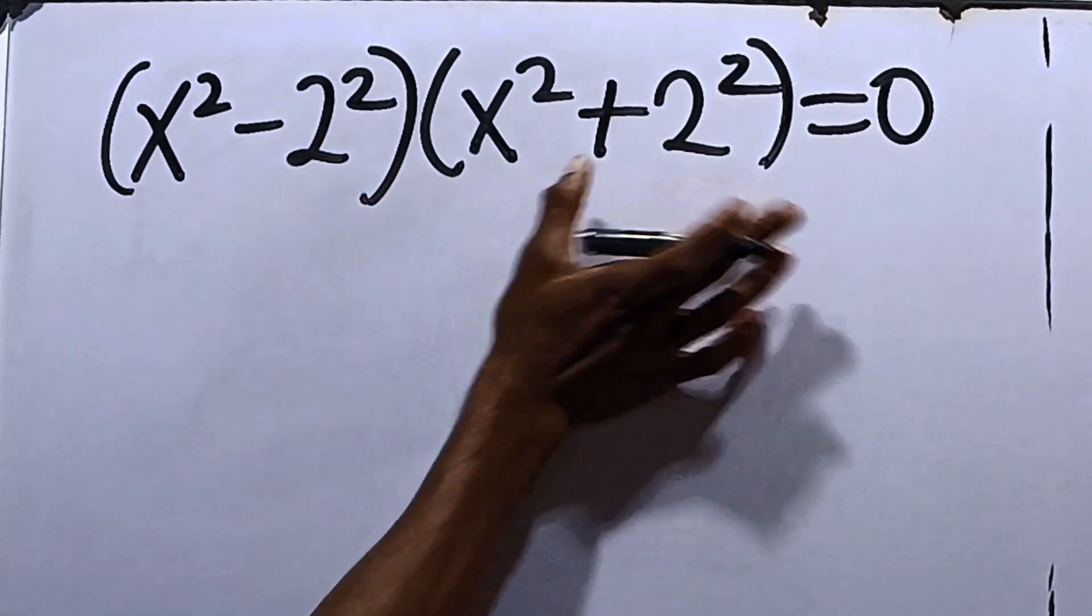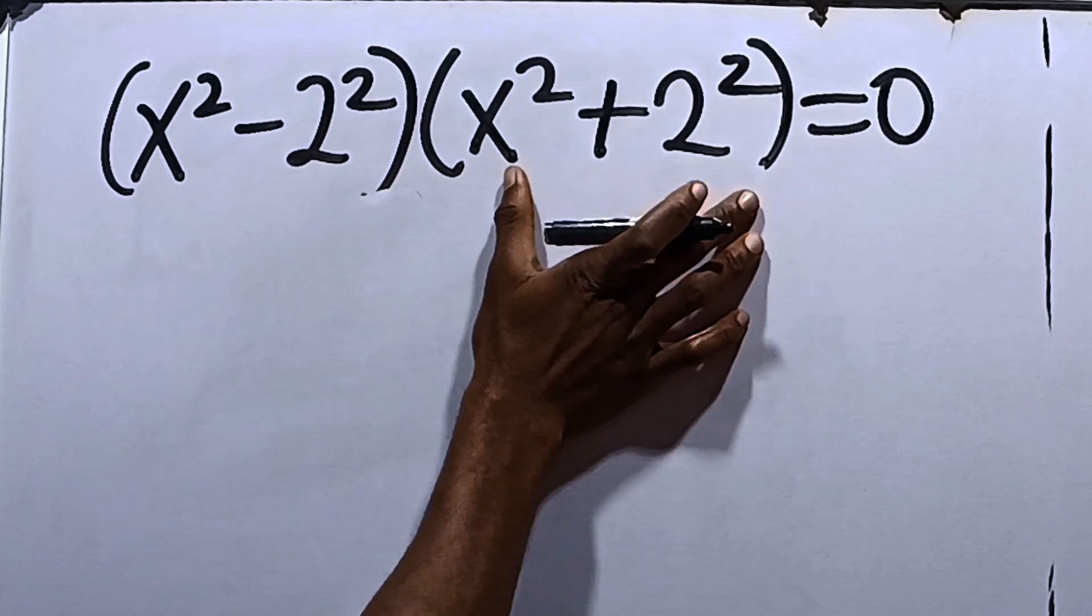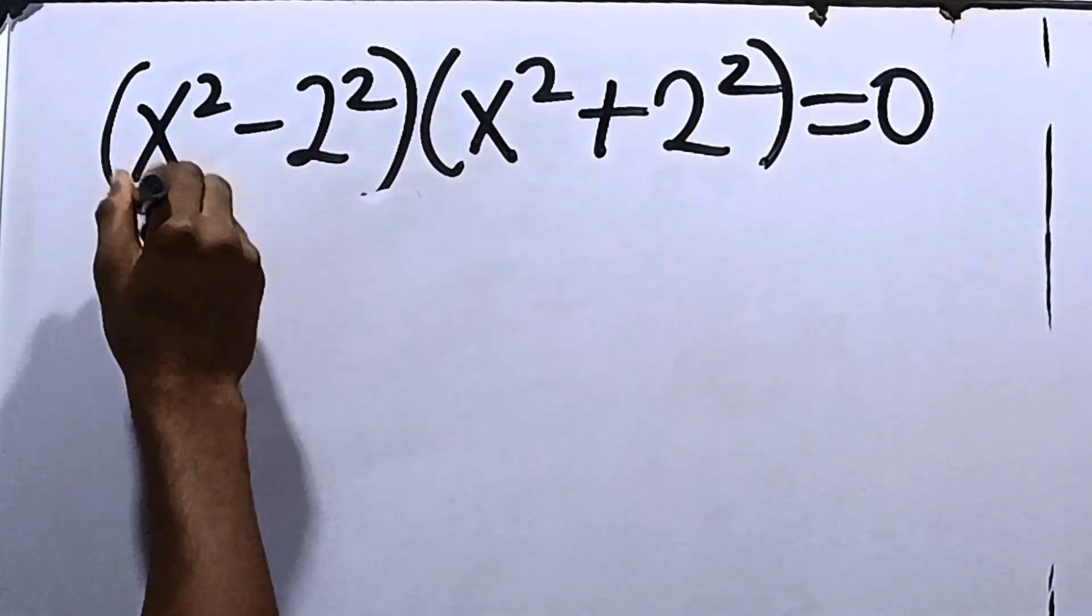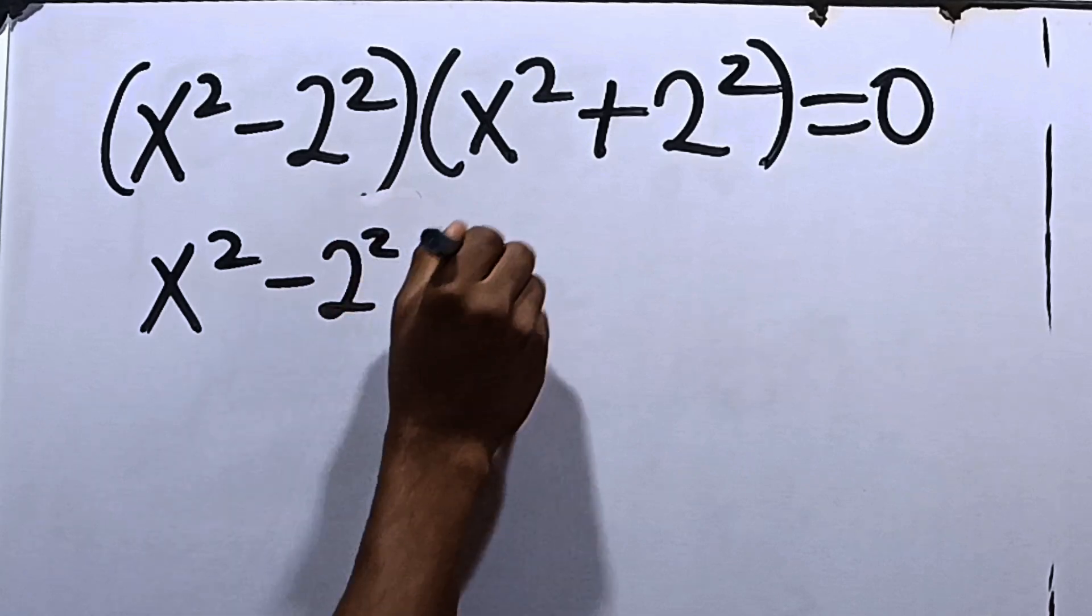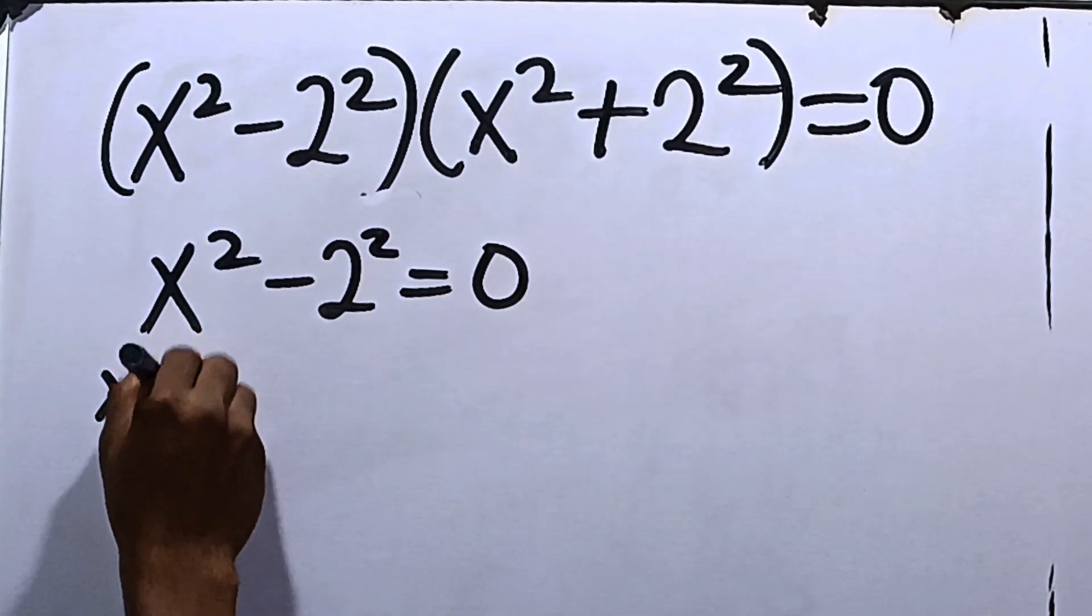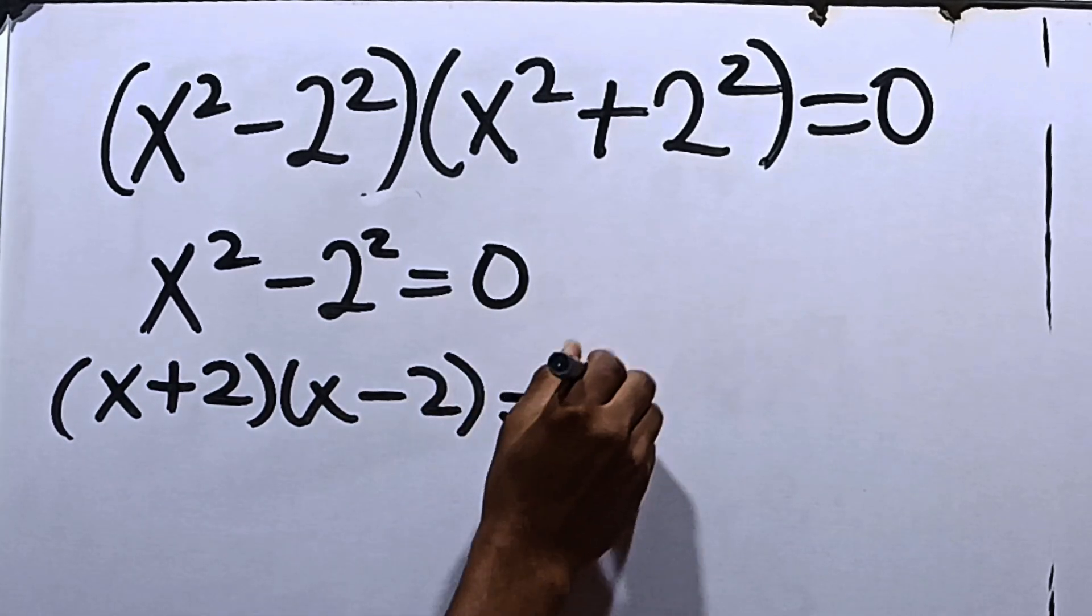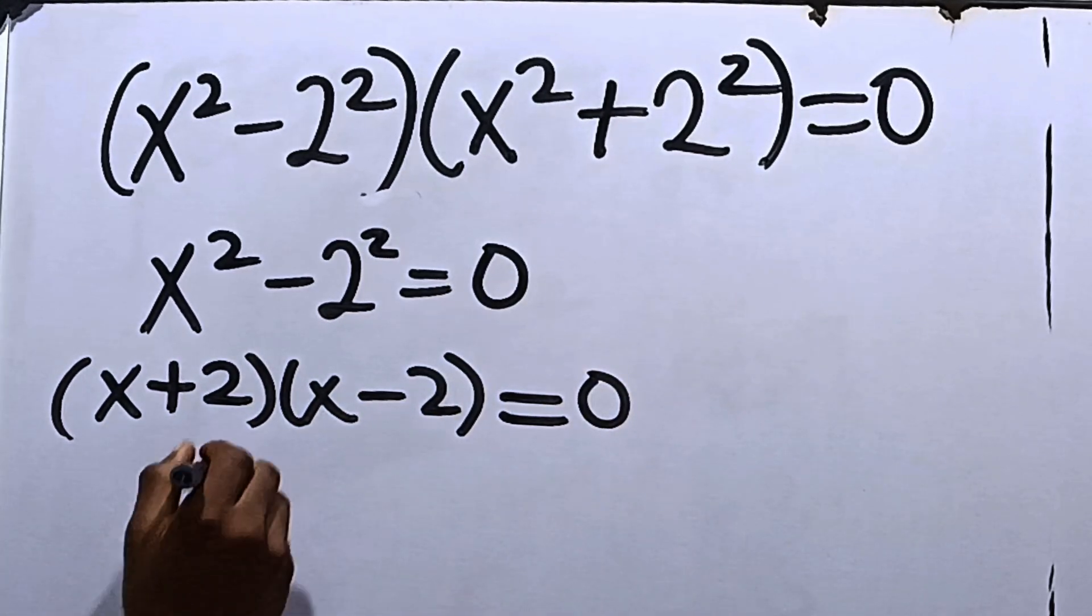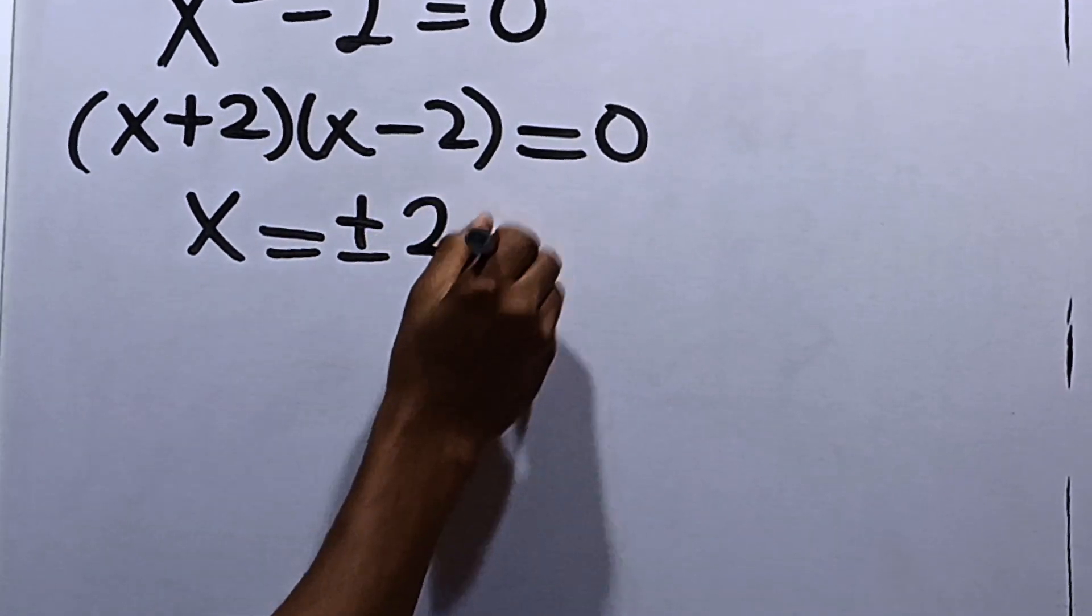When the product is equal to 0, it's only the first one is equal to 0 or the second one is equal to 0. So, it's either we now have x squared minus 2 squared to be equal to 0. Again, this is difference of 2 squared. So, we can say that x plus 2 multiplied by x minus 2 is equal to 0. We now have that x is equal to plus or minus 2.